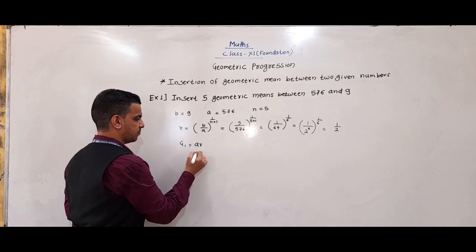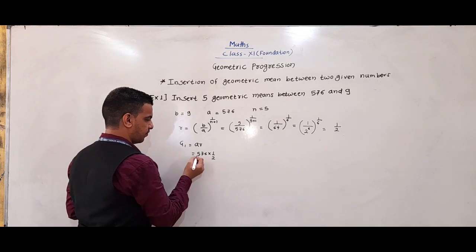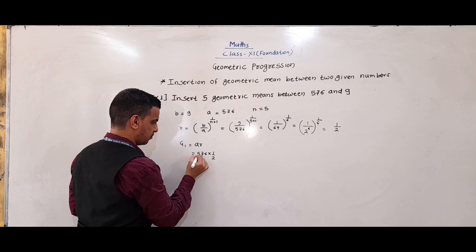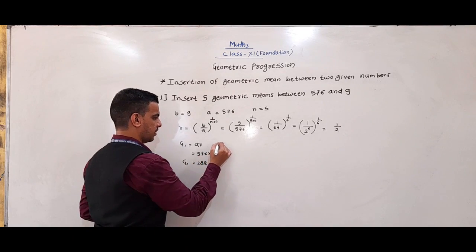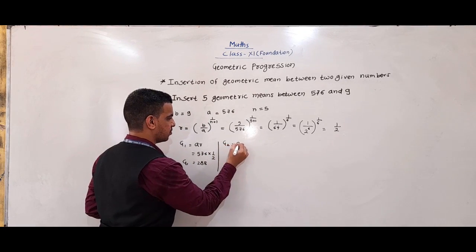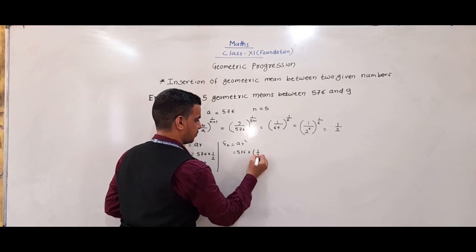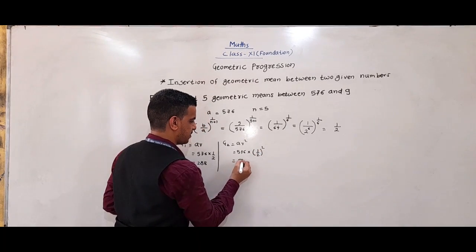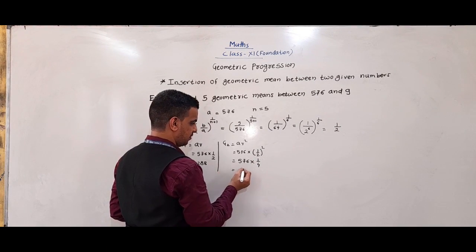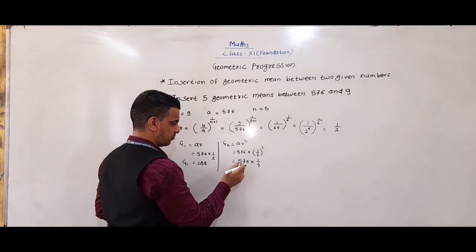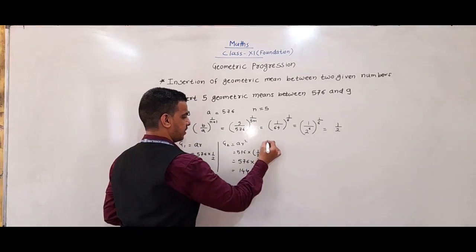Now we find the 5 geometric means. G1 = AR = 576 × (1/2) = 288. G2 = AR² = 576 × (1/4) = 144. G3 = AR³ = 576 × (1/8) = 72.